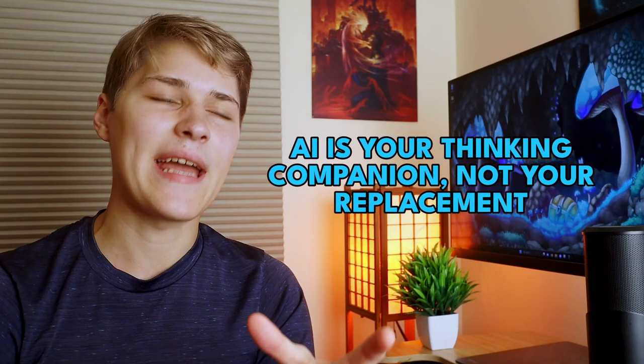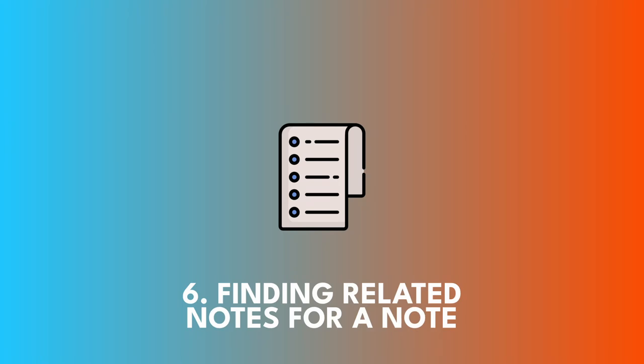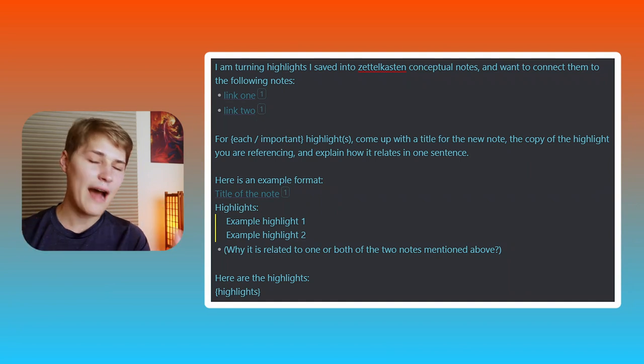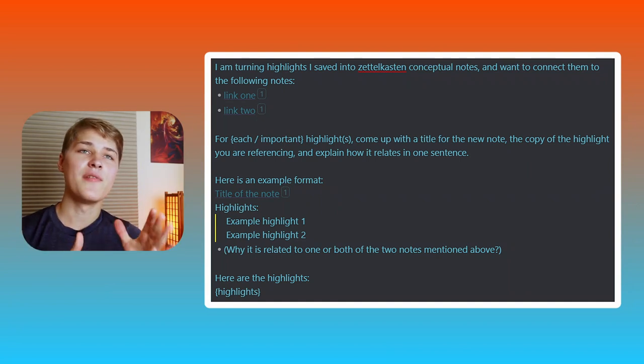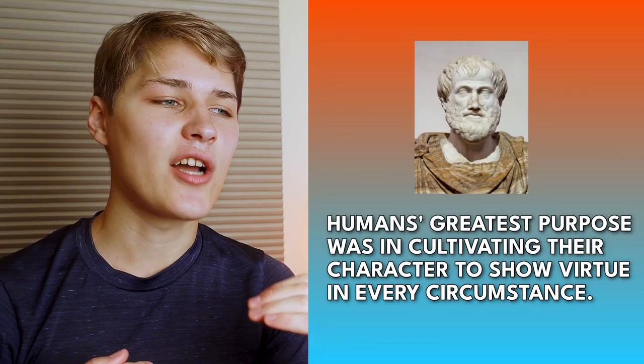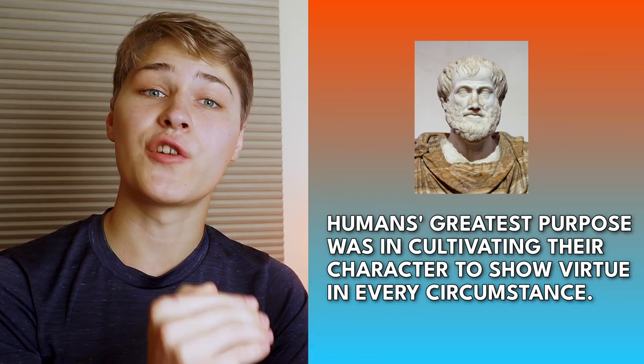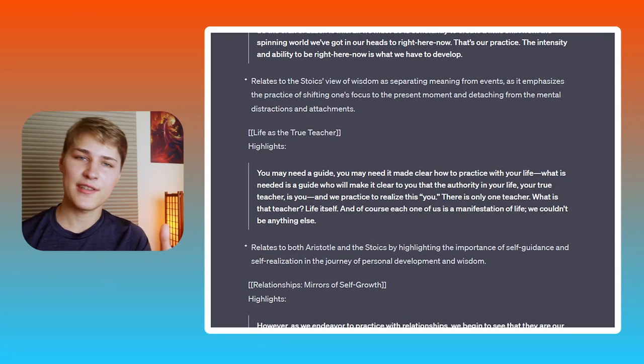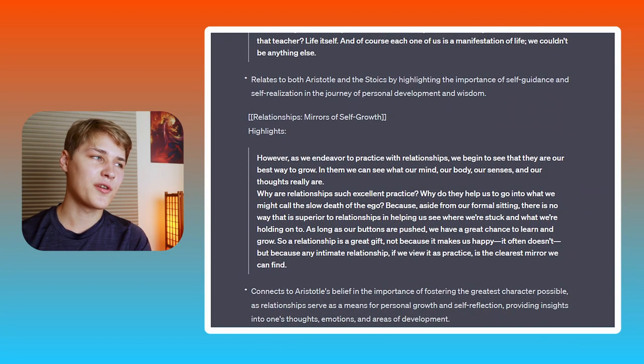Prompt 6 is finding related notes for a note. This is great for when you know you want to connect two notes but don't know how. I fed it some notes on Aristotle — about how Aristotle believed humans' greatest purpose was cultivating their character to show virtue in every circumstance — and I wanted to connect that to highlights I took on Zen practice and Buddhism. It came up with some great ways of connecting them that I might not have thought of on my own — great for brainstorming when you're stuck rather than replacing your thinking.